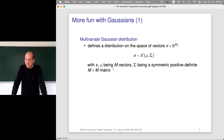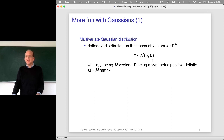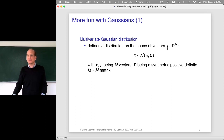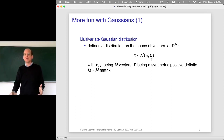Let's first repeat what the multivariate Gaussian distribution is. It's the distribution defined on the space of vectors x, where x is a vector from R^m. We write x is distributed according to a Gaussian distribution with two parameters: mu, which comes from the same space as x and describes the center location of the data, and sigma, which is the covariance matrix — an m-by-m matrix explaining the variance in different directions.